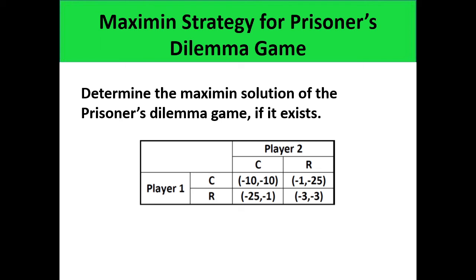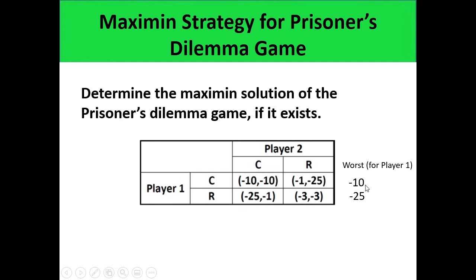We constructed the normal form of the Prisoner's Dilemma game in the previous video. Let's analyze the maximin strategy of the row player. If the row player decides to confess, the outcomes are either negative 10 or negative 1, and the worst is negative 10. If the row player decides to remain silent, the outcomes are either negative 25 or negative 3, and the worst is negative 25. Between negative 10 and negative 25, the best is negative 10, which corresponds to confess. So the maximin strategy for the row player is to confess.